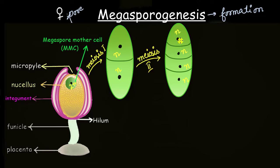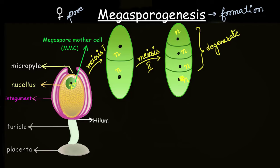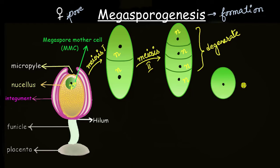The megaspore mother cell gives rise to four spores at the end of meiosis. However, three of these spores degenerate — they sacrifice their nourishment so that one spore can have a healthy, fully nourished life. These three cells give up all their nourishment to just one cell, which becomes the functional megaspore. Since only one spore later gives rise to an embryo sac, this entire process is called monosporic development.